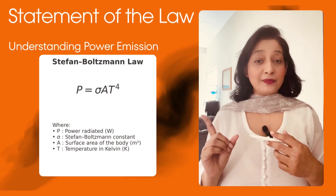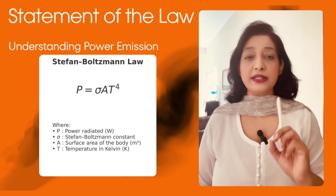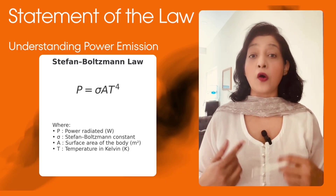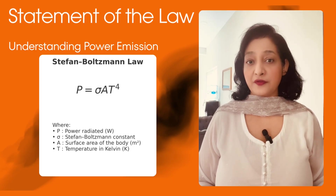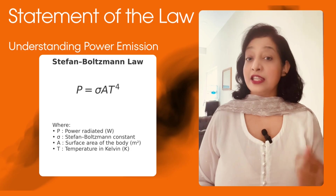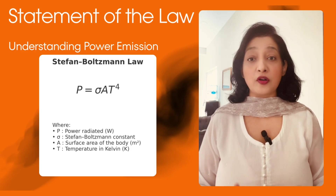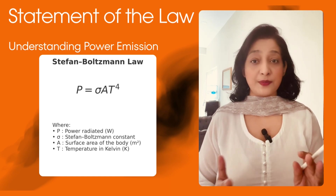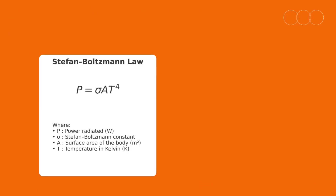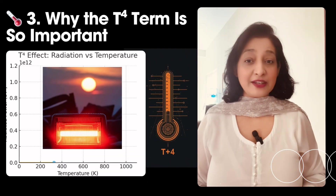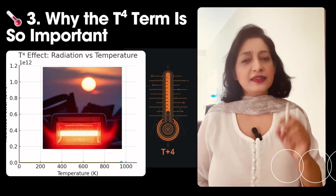Look at the diagram here — the mathematical formula is shown. The total power radiated per unit time from the surface of a hot body is directly proportional to the fourth power of its absolute temperature. In the formula, P is the power radiated in Watts, sigma is the Stefan-Boltzmann constant, A is the surface area of the body in m², and T is the temperature in Kelvin.